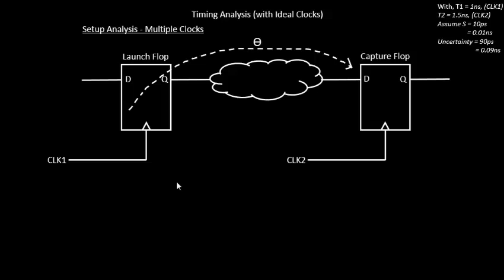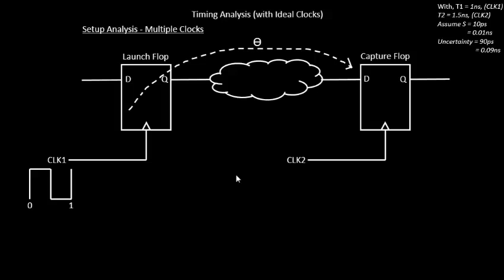Let's draw the circuit. The launch flop launches data using clock one, while data is captured by clock two. Clock one has a period of 1 nanosecond and clock two has a period of 1.5 nanoseconds. The combinational logic delay theta remains the same as before — clock-to-Q delay plus wire delays. Now let us draw the clock waveforms: clock one period is 0 to 1 nanosecond, and clock two period is 0 to 1.5 nanoseconds.